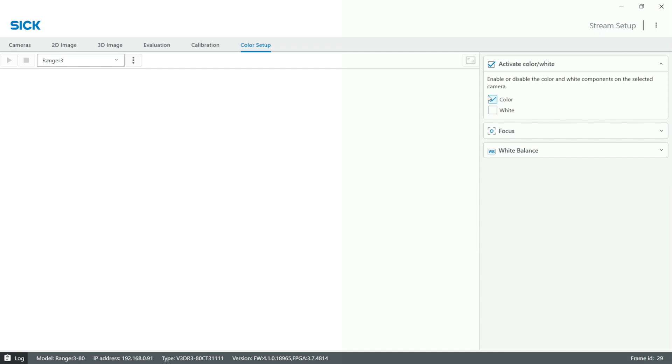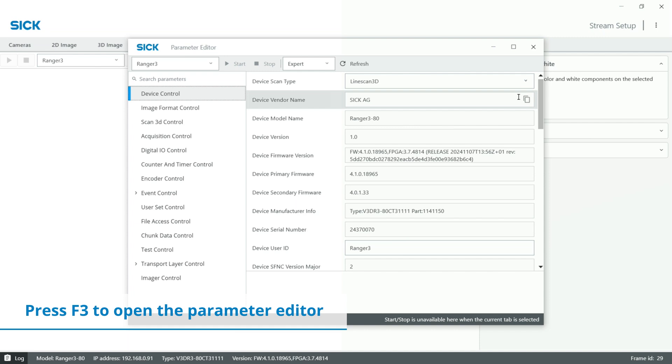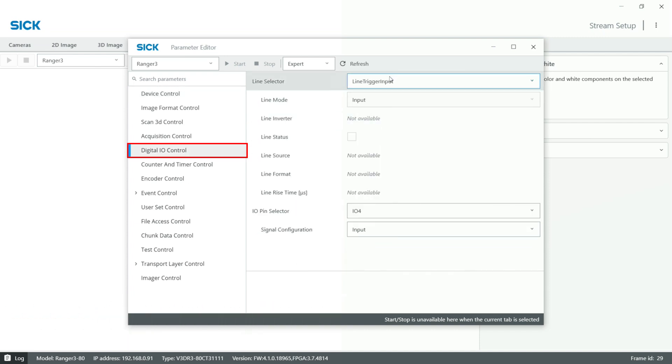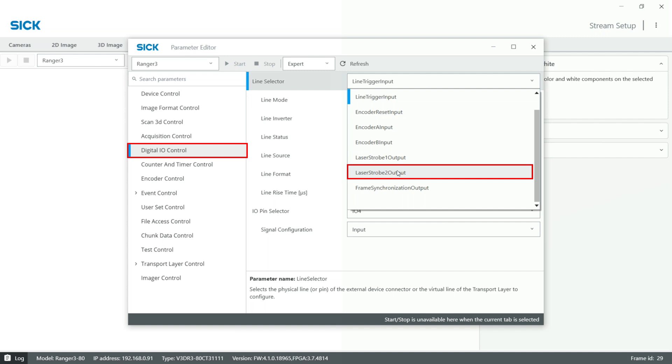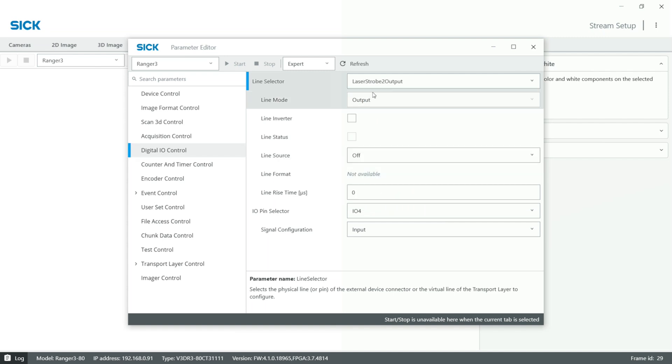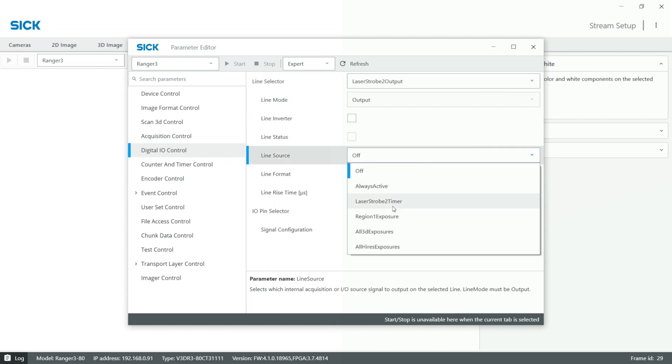Now we want to configure the camera so that it only triggers the LED during the exposure of the high-resolution rows. So in the parameter editor, under digital I.O. control, choose laser strobe output 2 as a line selector and then under line source, choose all high-res exposures.